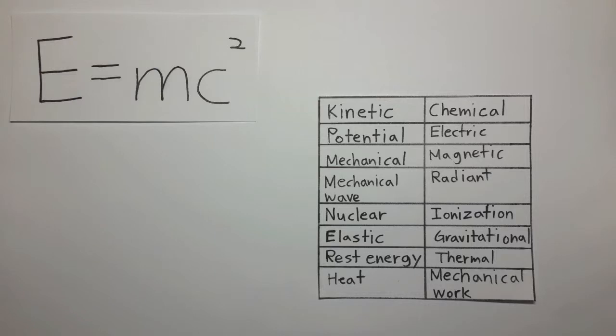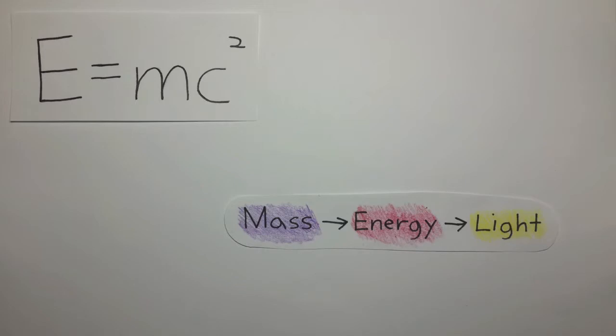Energy can exist in many forms, and the sun is always burning, changing its mass into energy, and it emits light as a result.